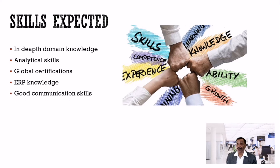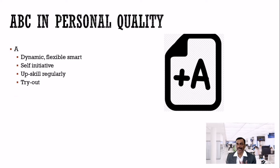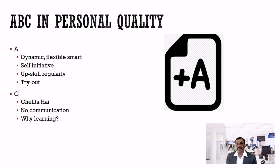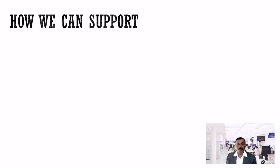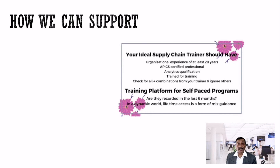You are also expected to have good communication skills. I have seen a small percentage of people who are very dynamic, flexible, and smart — they take self-initiative, upskill regularly, and try new things. On the other hand, 70 to 80 percent of people have a 'chelta' attitude: why should I learn, why should I spend money on education, let me retire in the same company. But the future is going to be different. When evaluating a training institute or trainer, check three things: whether they are practically experienced, whether they have global certification, and whether they have analytical knowledge.